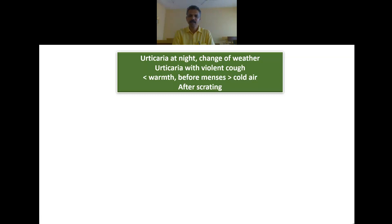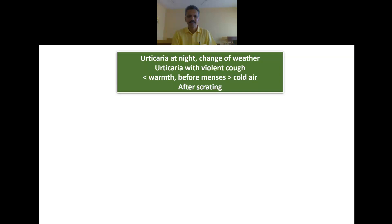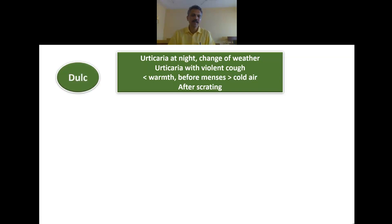Fourth question: urticaria mainly coming at night, change of weather, urticaria with violent cough, aggravation warmth, amelioration cold, amelioration after scratching — name the remedy. We've had three correct remedies so far — Apis, Arsenic, and Bovista. The answer here is Dulcamara. Very good — at least interaction is happening.